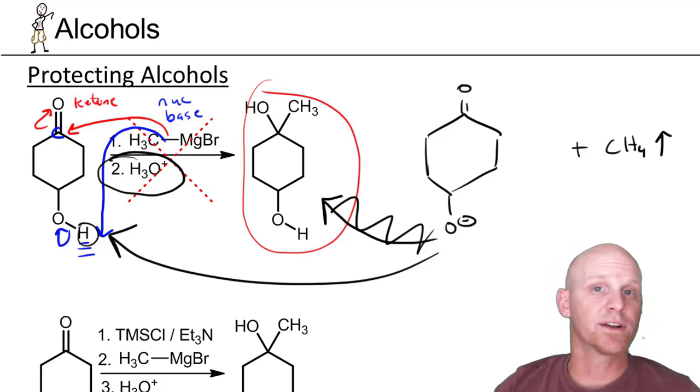So your Grignard reagent is destroyed, converted into methane, and your original reactant gets returned back to its original state. You did not accomplish the reaction you wanted to do, so that's why you got the big red X here.